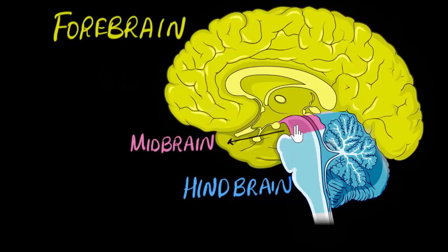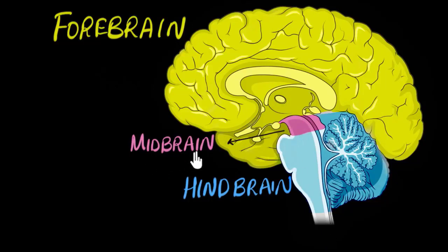The midbrain is actually the beginning part of the brainstem. The brainstem is what the forebrain sits on top of, and it connects the forebrain to the spinal cord. The beginning section of the brainstem is what we call the midbrain, and the later section of the brainstem is part of the hindbrain.